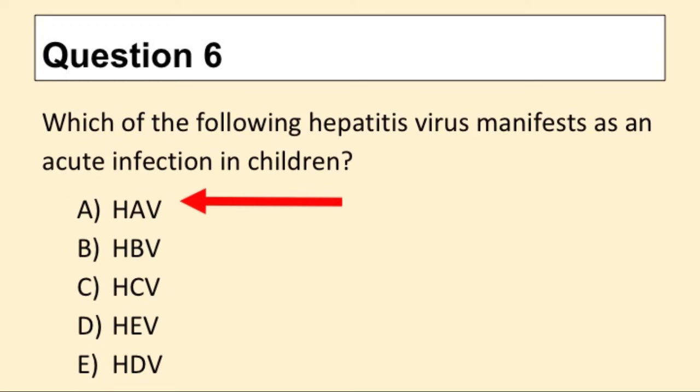Question 6. Which of the following hepatitis virus manifests as an acute infection in children? The answer is A: HAV.